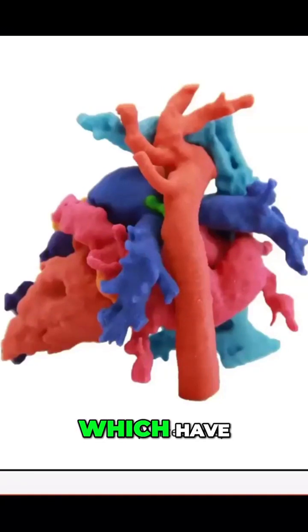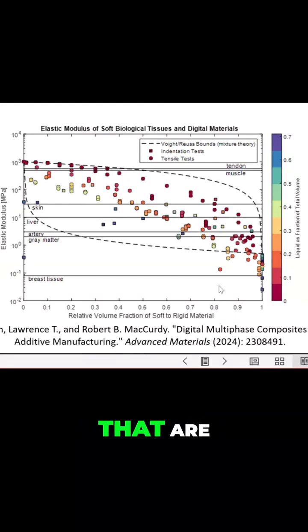You can get composites which have very large variations in their mechanical properties. So in this case, I'm showing Elastic Modulus, Young's Modulus. And so you can get materials that are sub-100 kilopascal all the way up to things that are gigapascal without switching materials.